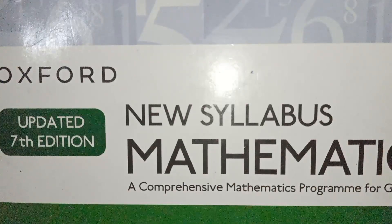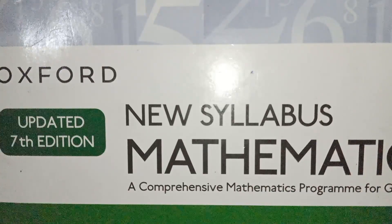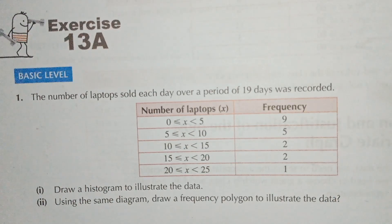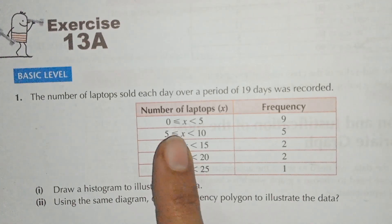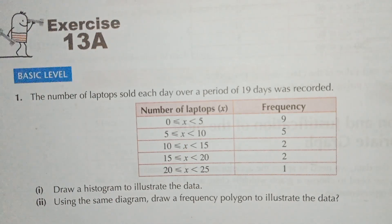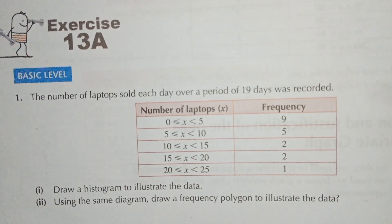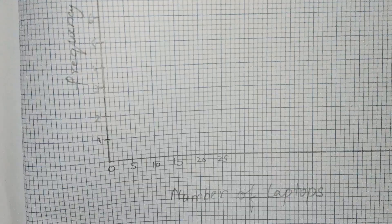This is Mathematics, The Three Updated Seventh Edition. Today we will do Exercise 13a, question number one and two. In Exercise 13a, the number of laptops sold each day over a period of 19 days were recorded. These are the number of laptops and this is the frequency. When the data is provided in a group like zero to five, five to ten, and ten to fifteen, we have to make the histogram or frequency polygon. In part one, we draw the histogram, and in part two, using the same diagram, we draw a frequency polygon.